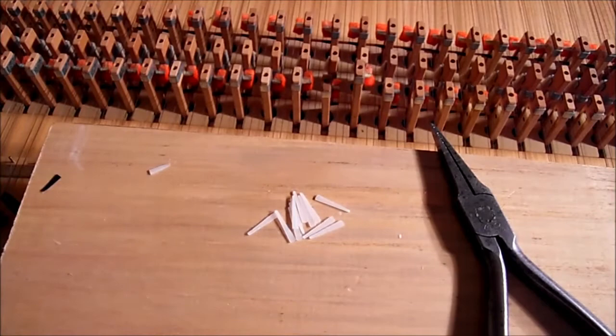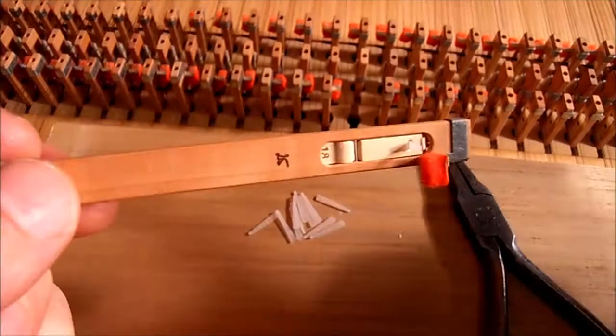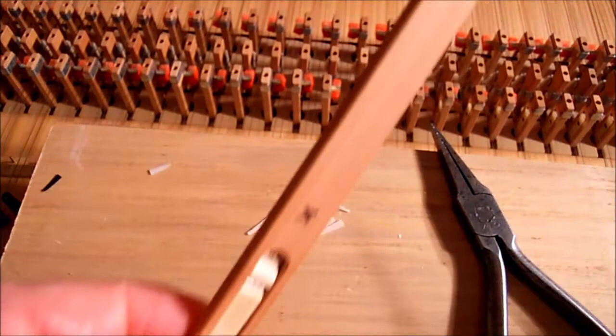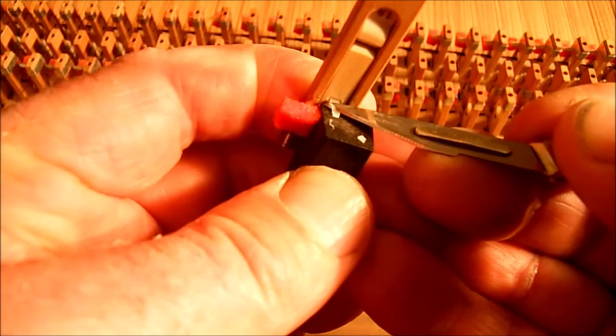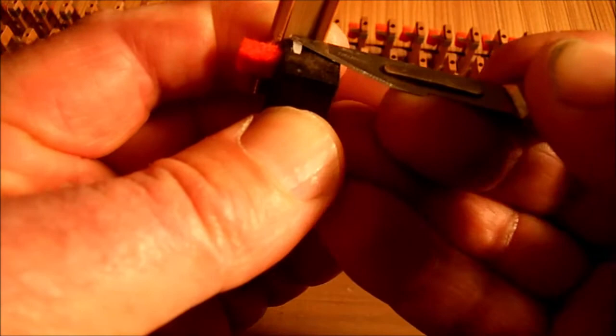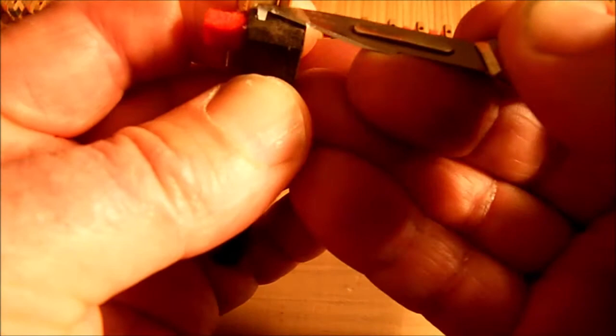But it's still too loud. The next step, take the jack upside down again on the plectrum block, and thin the plectrum to make it quieter, since it's more flexible and therefore quieter. Take off a little bit at a time, and keep trying it back in the instrument.